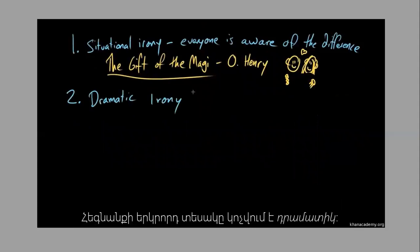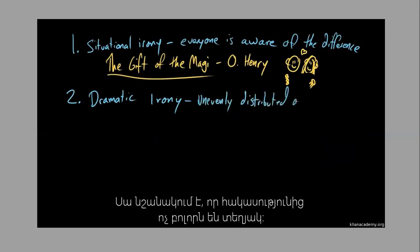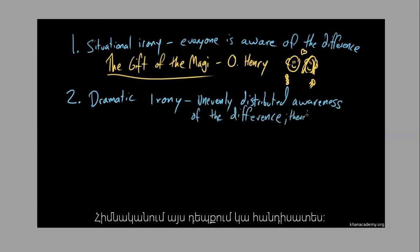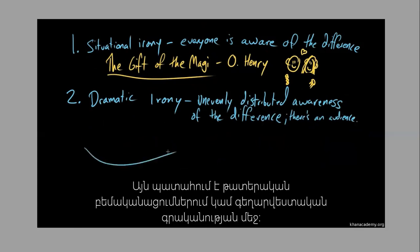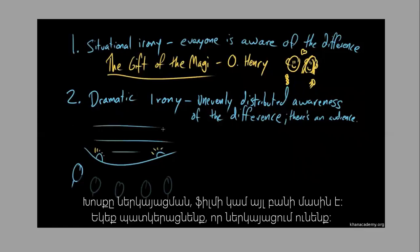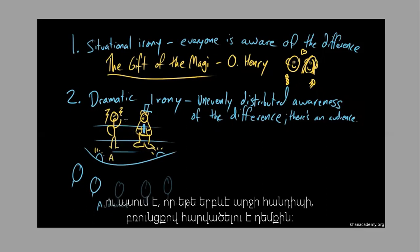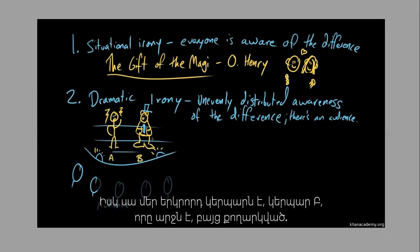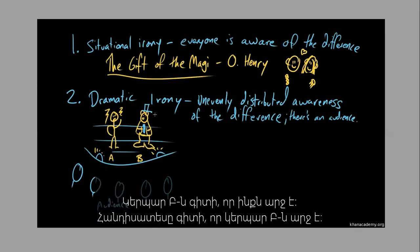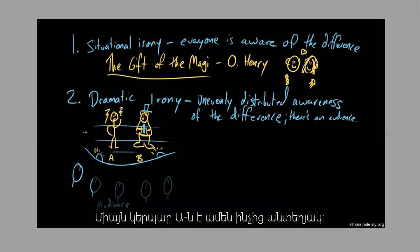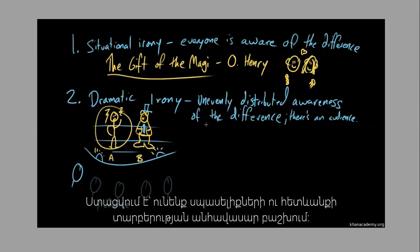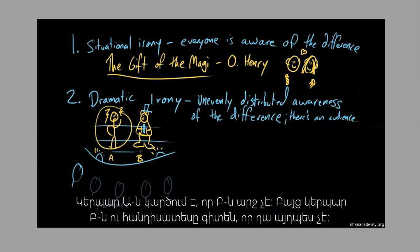Dramatic irony means there is an unevenly distributed awareness of the difference — specifically, there is an audience. This comes into play in fiction: a play, movie, or similar work. Imagine Character A, who really doesn't like bears, is talking about punching a bear if he ever meets one. Character B is a bear in disguise, wearing a hat and a tie. Character B knows it's a bear; the audience knows it's a bear; Character A is unaware. This unevenly distributed awareness of the difference between expectation and result — that's dramatic irony.